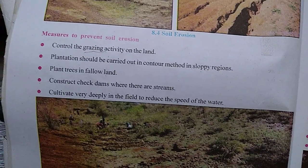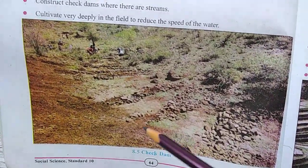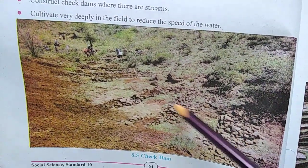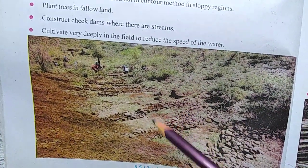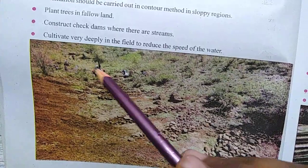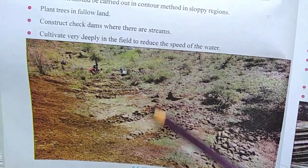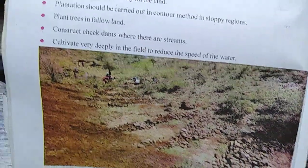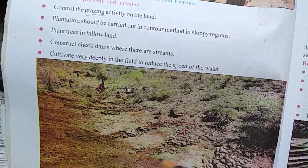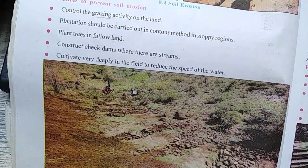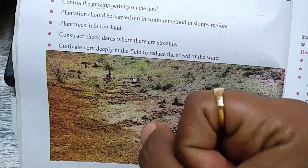Also, plant trees in fallow land — land which can be cultivated. Construct check dams where there are streams; these groups of stones create hurdles so the flow of water reduces. Check dams are constructions where the flow of water decreases. Additionally, cultivate deeply in the field to reduce the speed of water. Deep cultivation means roots will hold the soil so that erosion is not possible.